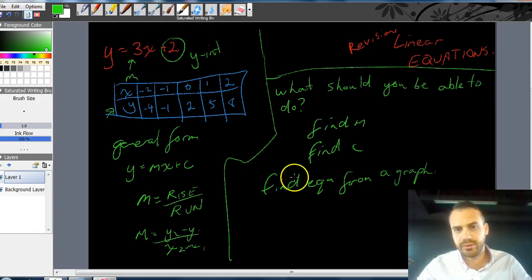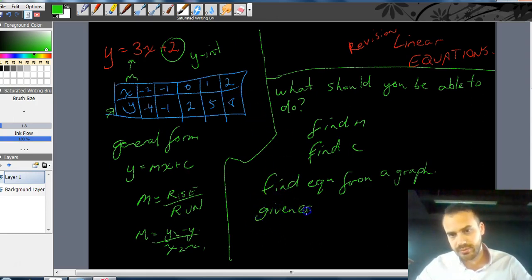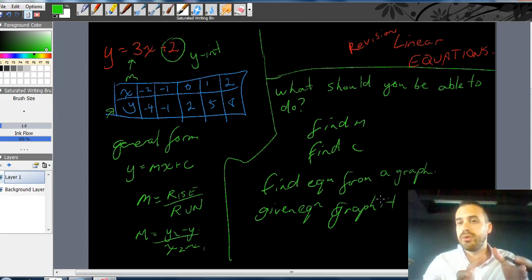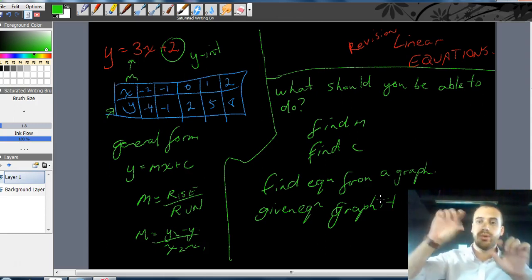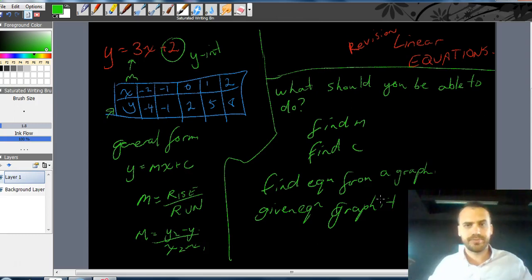What else should you be able to do? Well, you should be able to go reverse to that. So, if I give you an equation, graph it. So, I should be able to give you an equation, something like y equals 5x minus 2, and you should be able to create a graphical representation of that. And you should be able to create that by putting one point here, one point here, and drawing a line through there. You've learnt all of this. This is stuff that you've done last year and previous years.